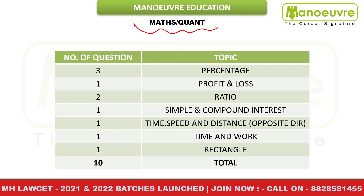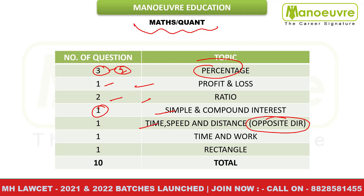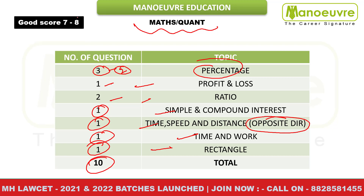Next is the quant/math section. Most students who were worried about math said this section also went very well — the type of questions that appeared were exactly what we had prepared in class. Percentage: 3 questions, of which 2 were case-let based — same type appeared in 2019 also. Profit and loss: 1 question. Ratio: 2 questions. Simple and compound interest: 1 question. Time, speed and distance — opposite direction question: 1. Time and work: 1. Rectangle/mensuration-geometry combination: 1 question. So 10 questions overall, and the good score for this section is 7 to 8 marks.